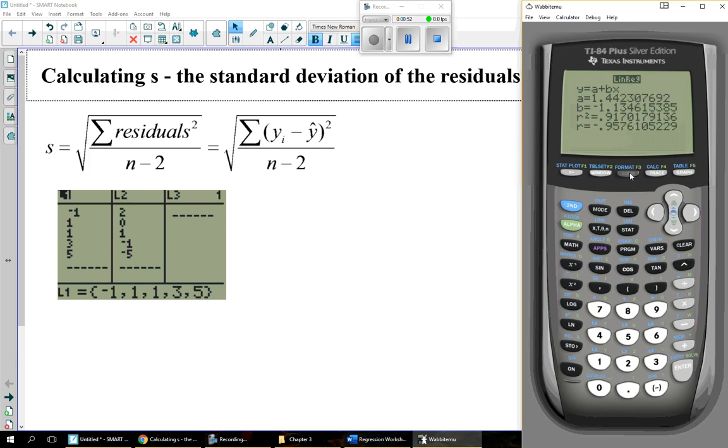If I hit graph, I can see the line of best fit superimposed on top of the data points. And these little vertical distances are my residuals. What I'm looking for now is the typical deviation of those residuals, or the standard deviation of the residuals as given by this formula.